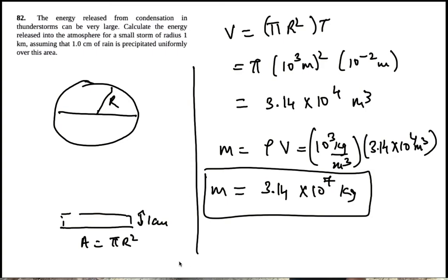Now, 1,000 kg is roughly the mass of a small car. So this is saying the mass of 31,000 small cars were condensed in this small cloud.